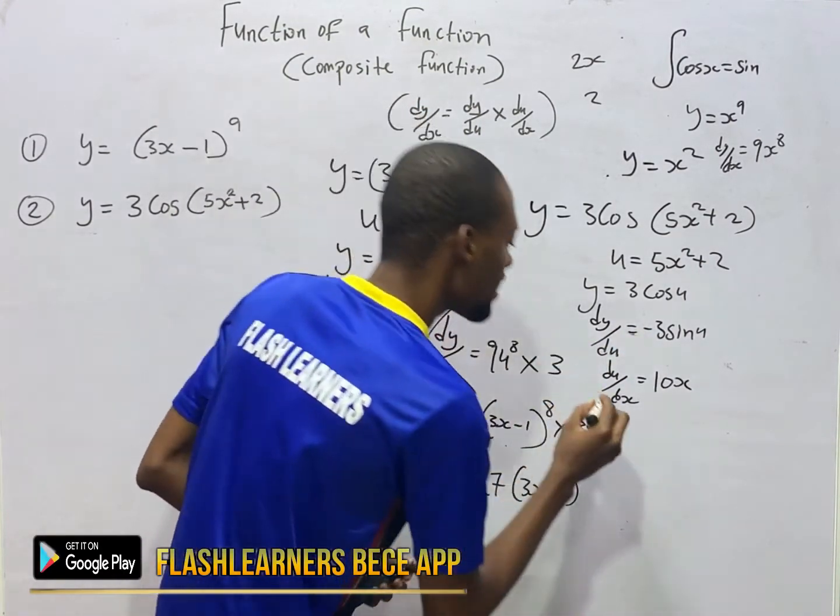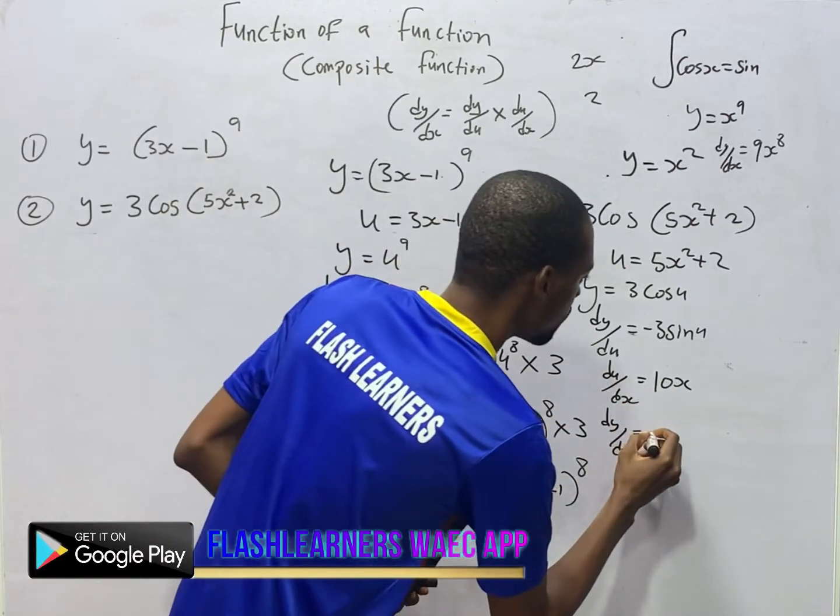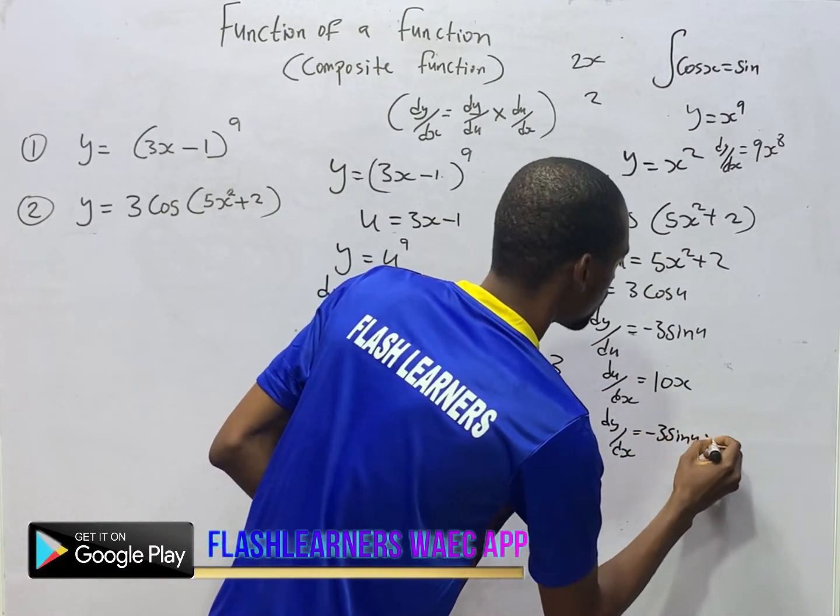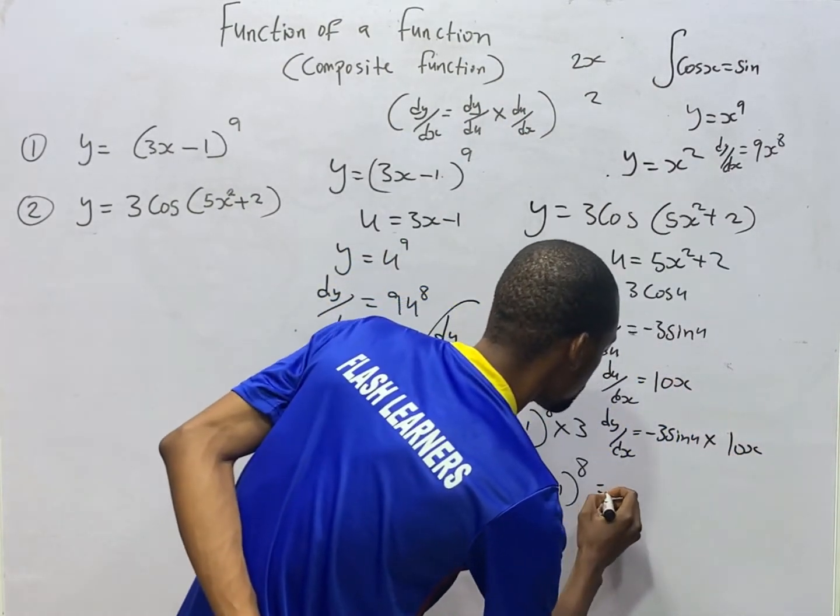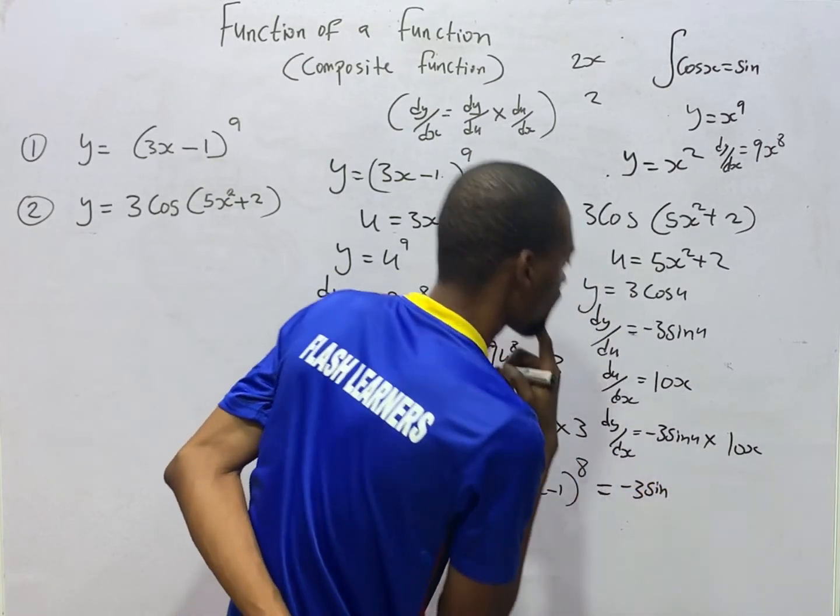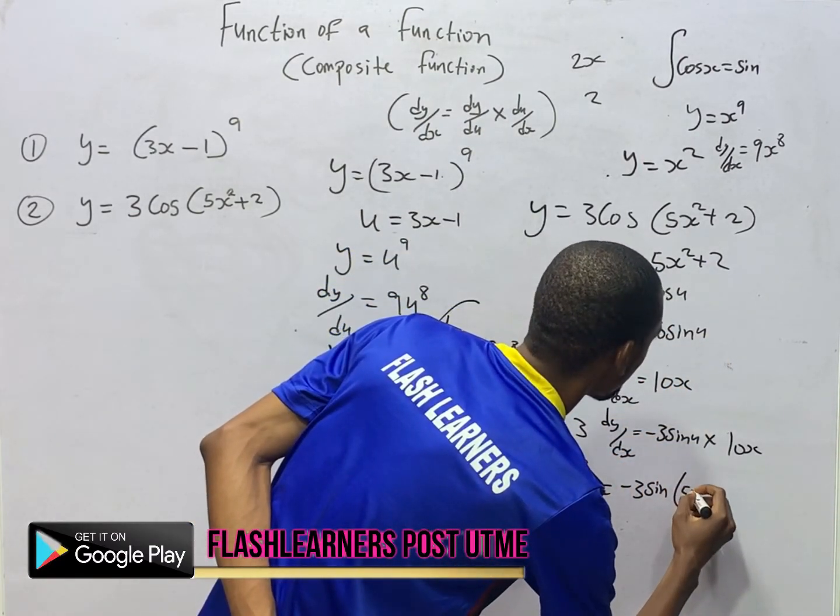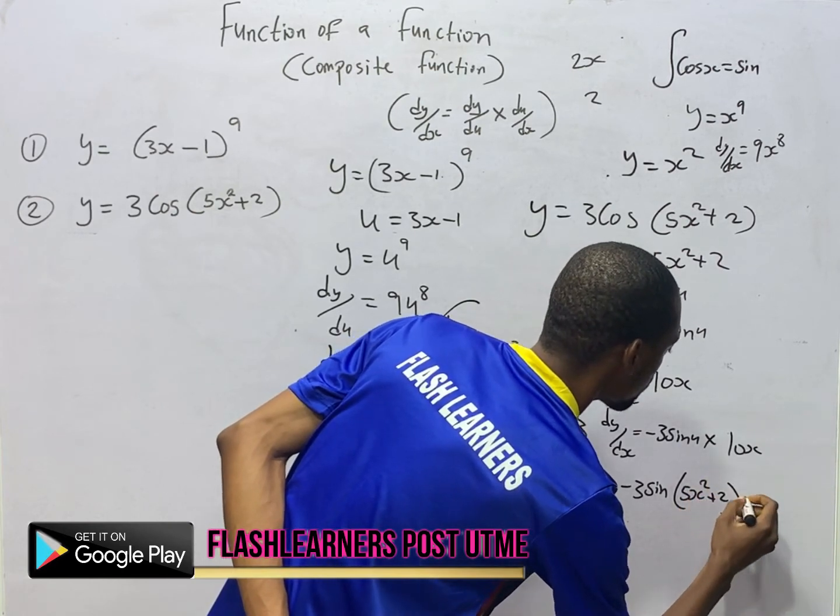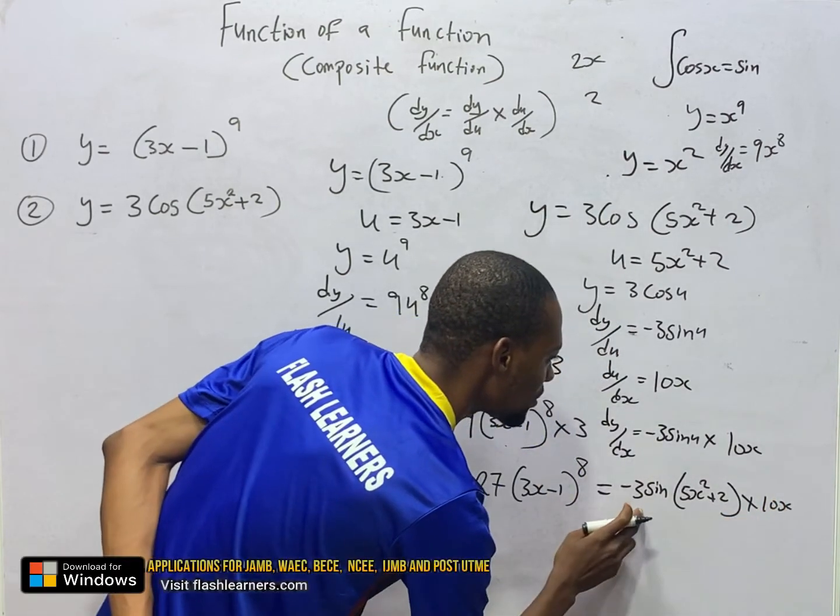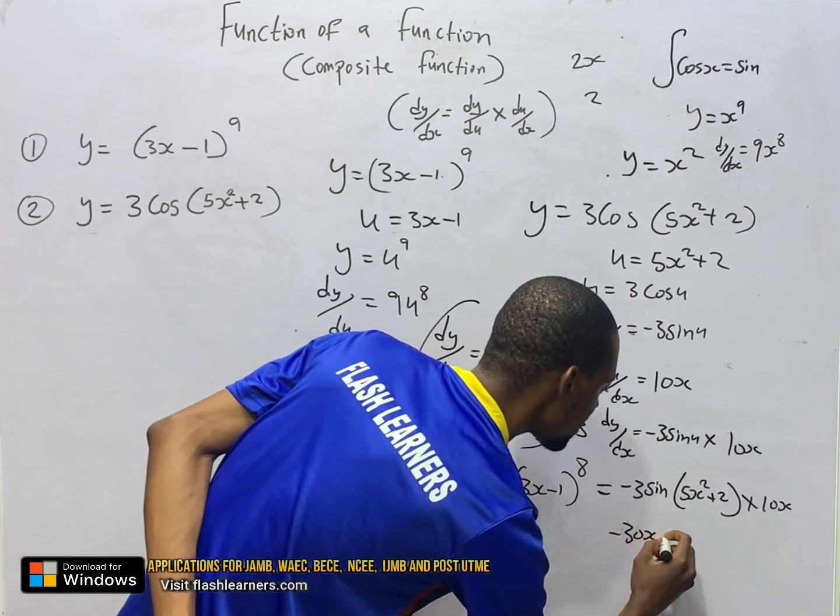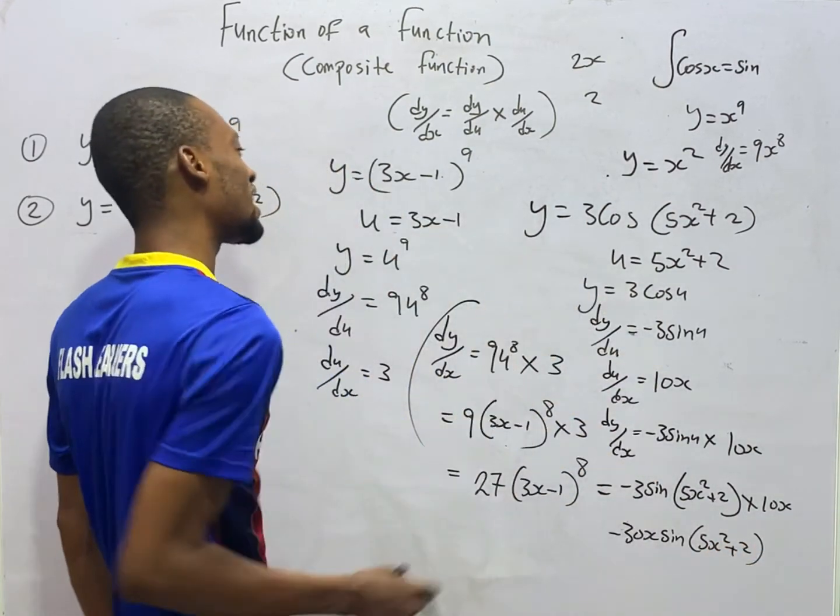dy/du is -3sin u times du/dx, that is 10x. This becomes -3sin, u is 5x²+2, so let's substitute: 5x²+2 times 10x. So this gives you 10 times 3. That should be -30x sin(5x²+2). So something like that should work.